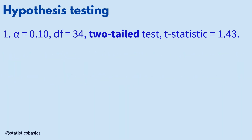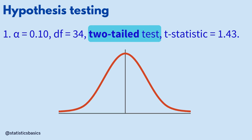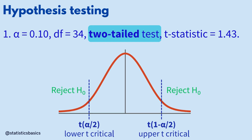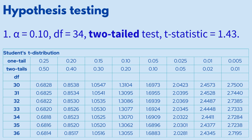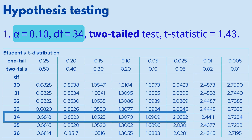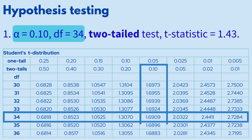In the first case, a two-tailed hypothesis test is conducted, meaning both lower and upper critical values will be required to define the rejection region. To find these values using the t-distribution table, locate the row corresponding to 34 degrees of freedom and the column for a two-tailed significance level of 0.10. The resulting t-critical value is 1.6909.